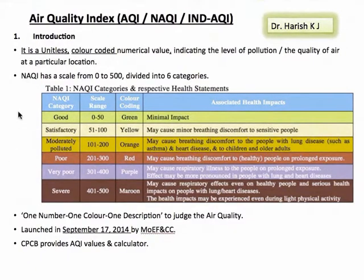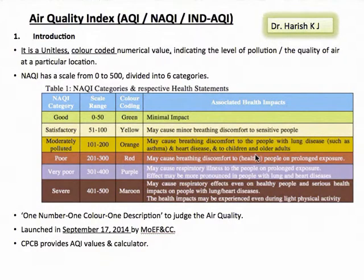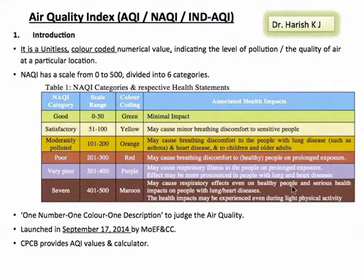Each category is associated with corresponding health impacts. The first category has minimal impacts. The second category impacts sensitive people. The next category impacts vulnerable people — that is, people with lung disease, heart disease, young ones, old ones, etc. The fourth category impacts all, including healthy people who get exposed. In the next category, impacts get manifested as illness. And the last category leads to severe health effects.